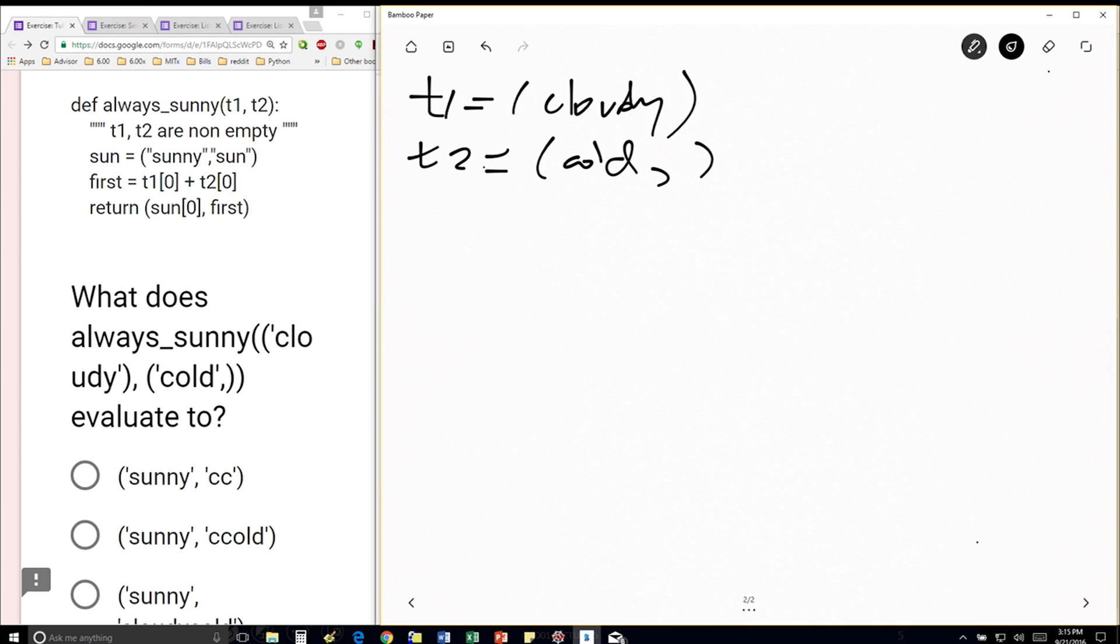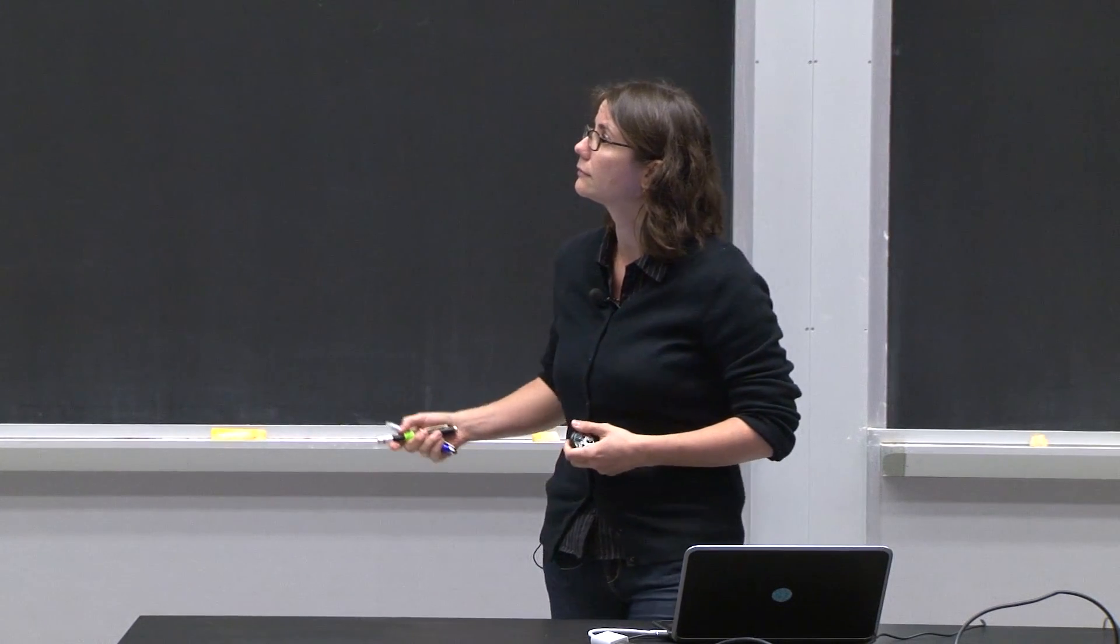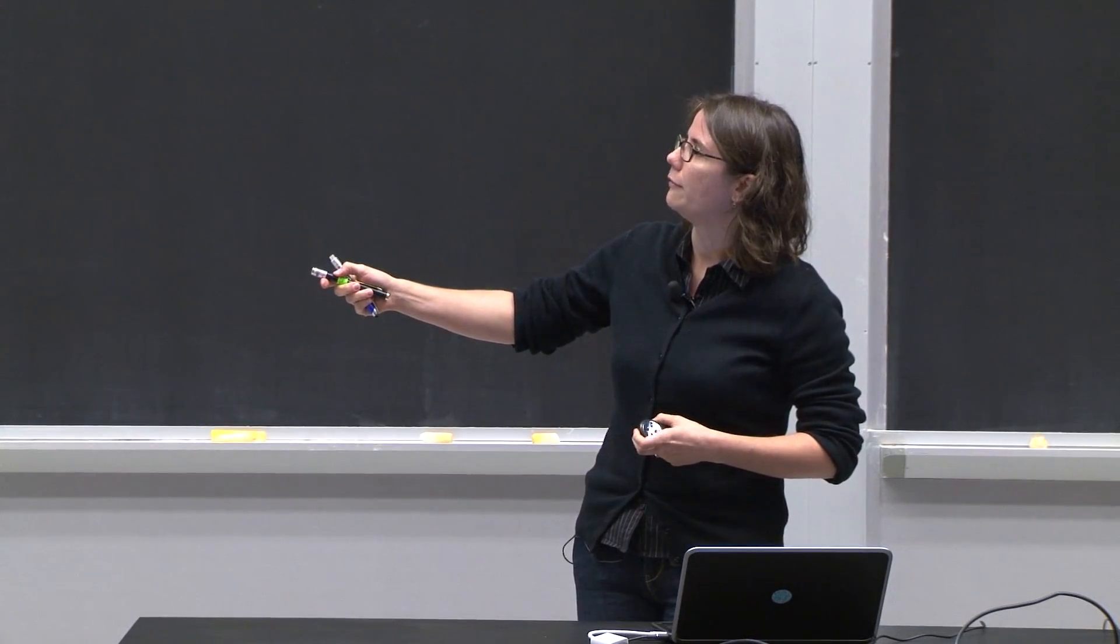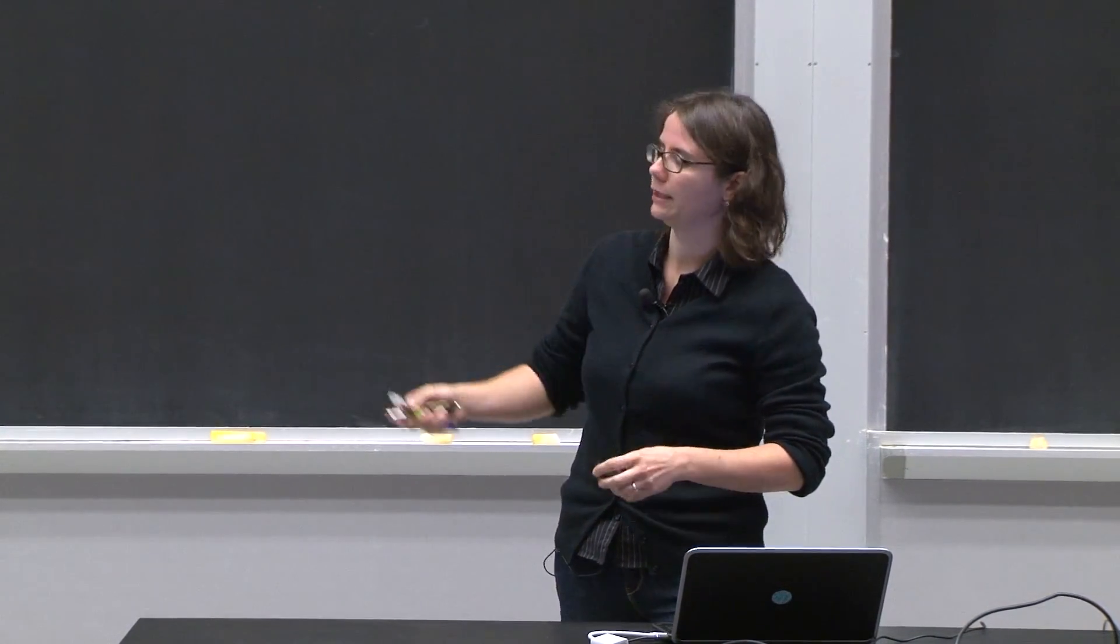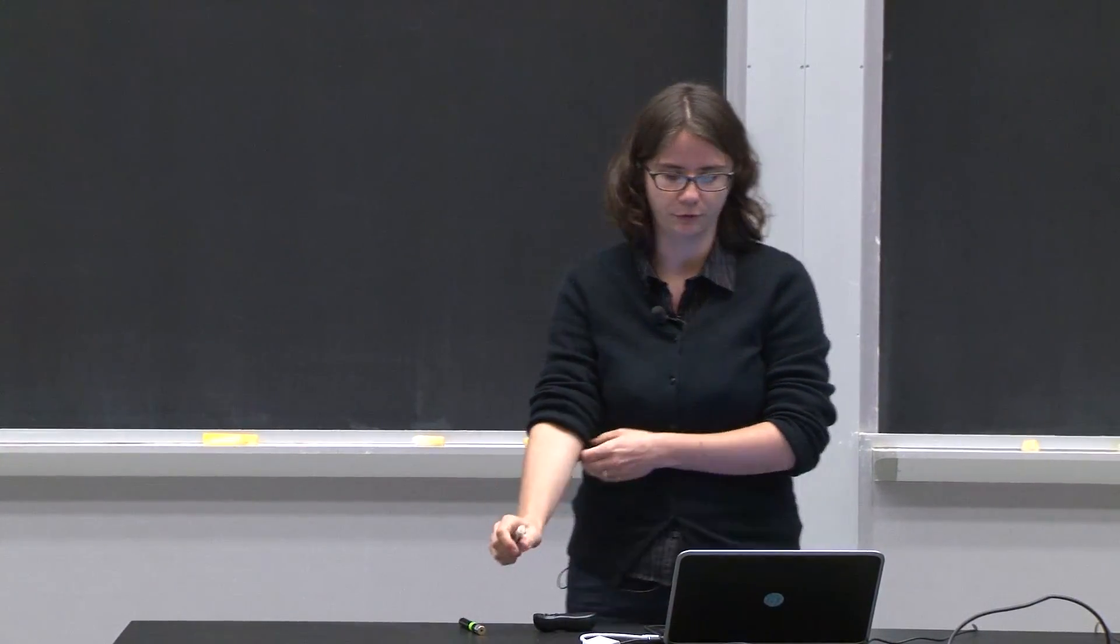With a comma, it's a tuple. Without a comma, it's a string. So t1 is actually going to be a string, and t2 is actually a tuple. OK? So that's the first sort of trick to this question.